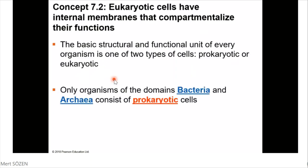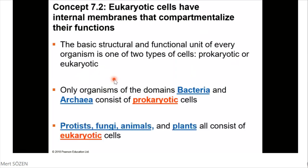Only organisms of domains Bacteria and Archaea consist of prokaryotic cells. So prokaryotic cells are seen only in organisms which belong to one of those two domains, domain Archaea or domain Bacteria. Protists, fungi, animals, and plants — which means domain Eukarya — have eukaryotic cells.